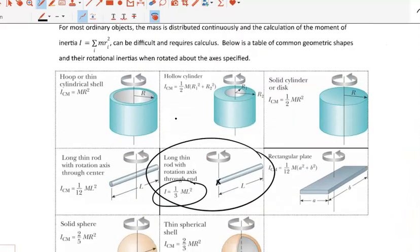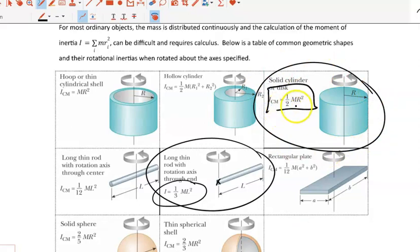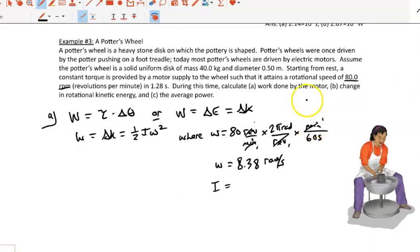So we need to look up the rotational inertia of a disk that's rotating about the center. So I'm going to go back earlier here. Where is that? That is actually this guy. That's the rotational inertia we need to use. 1 half m r squared.